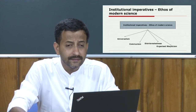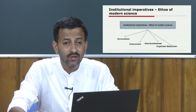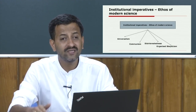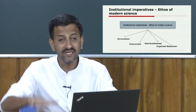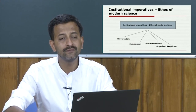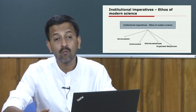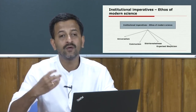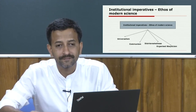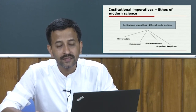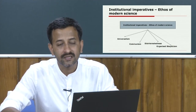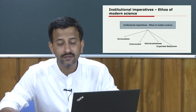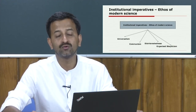Having discussed the ontological questions — what is being, what is existing, what is in reality — we have come to what ought to be, what should be, what is prescriptive and normative in nature. There we discussed Mertonian normative structure of science, Mertonian institutional imperatives, and Mertonian ethos of modern science.